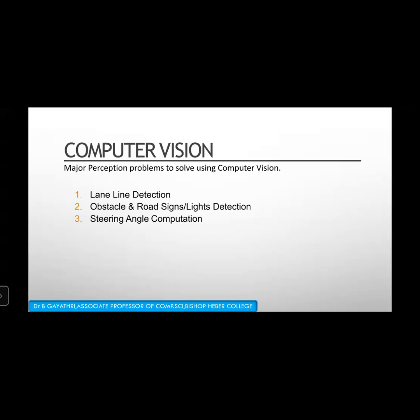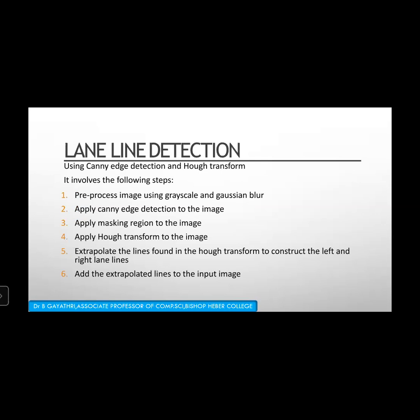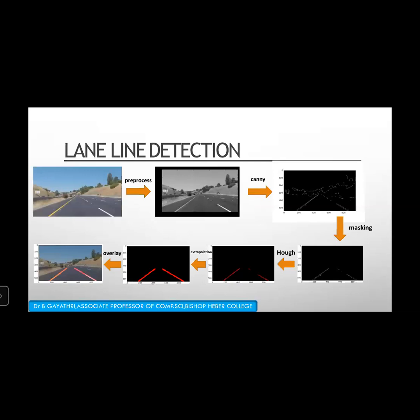Traffic lights must also be detected. Based on all these detections, we determine how to move. For lane line detection, the path planning must be identified properly. We use Canny edge detection and the Hough transform for this. Looking at the picture first will make it easier to understand these steps.